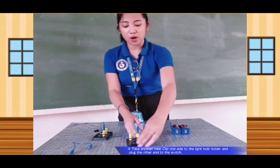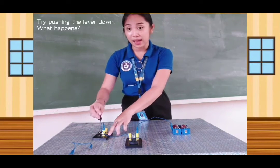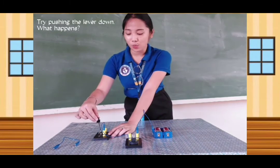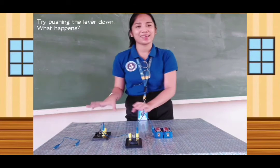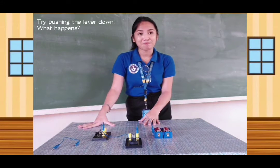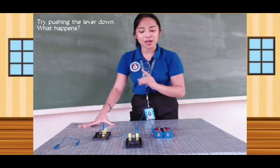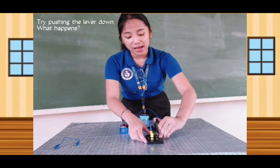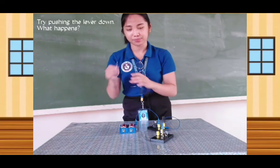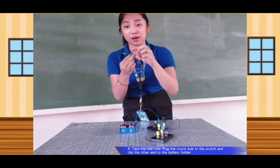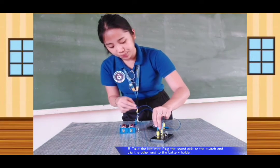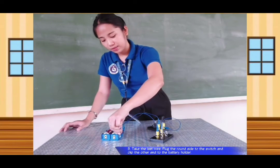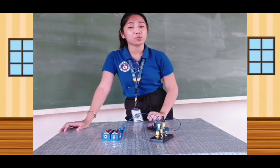Now that all three are connected, why don't we try lowering down the lever? Let's see if something happens. Ready? One, two, three. Did your bulb light up? No — that's because this circuit is still open; it's still not connected. So we still have to use one more wire. Using this wire, use the round end and plug it into the switch, then clip this side to your battery.